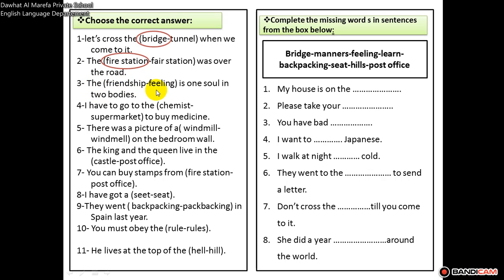Friendship or feeling? 'One soul in two bodies' — two people loving each other as if they are one soul — that is friendship, not feeling. Number four: to buy medicine, you go to the chemist, not the supermarket. We buy medicine at the chemist.